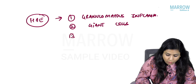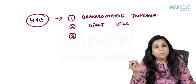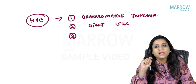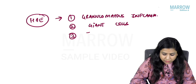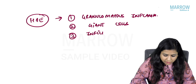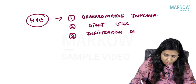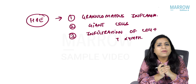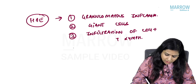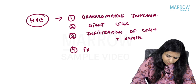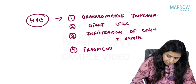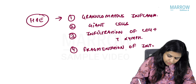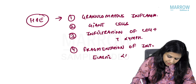Why is a granuloma formed? Because of CD4+ T cells. So there is an infiltration of CD4+ T lymphocytes. Another very important feature is the fragmentation of the internal elastic lamina.